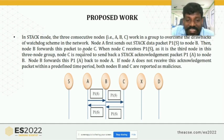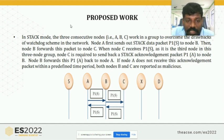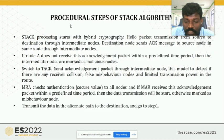At a certain time, if you cannot receive the acknowledgement, there is a risk of misbehavior in the route. So the system finds the alternative path.